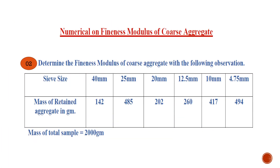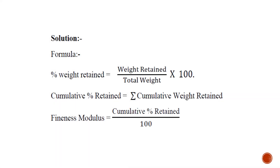The second question is on Fineness Modulus of Coarse Aggregate, where we determine the fineness modulus using given observations. The sieve sizes for coarse aggregate range from 80 mm to 4.75 mm, but here sizes from 40 mm to 4.75 mm are given, with weight retain for each sieve. The total weight is 2000 grams. The same formulas are used: percentage weight retain, cumulative percentage retain, and fineness modulus.